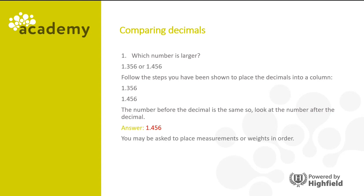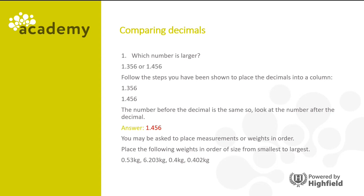You may be asked to place measurements or weights in order. So place the following weights in order of size from smallest to largest: 0.53 kilograms, 6.203 kilograms, 0.4 kilograms and 0.402 kilograms. We follow the same steps to find the answer. Looking at all of those, we can see that 6.203 kilograms is the only one bigger than the number one.